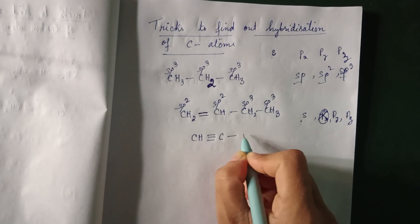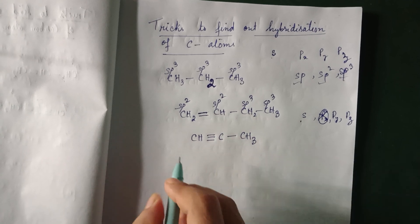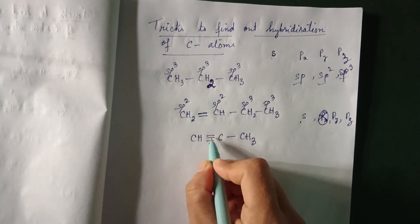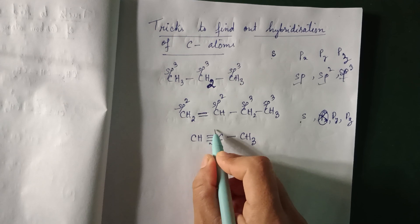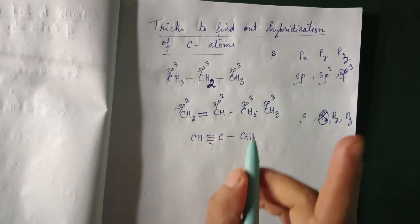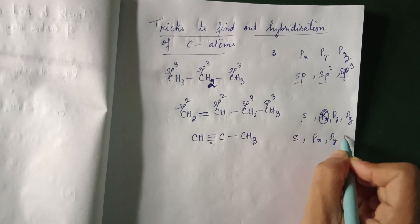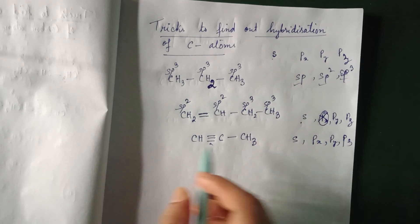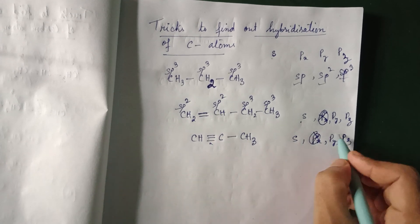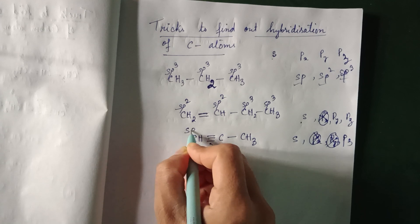Now let us go to a carbon with a triple bond: CH triple bond C single bond CH3. A triple bond means one sigma bond and two pi bonds. Whenever a pi bond is present, one p orbital is utilized. So the first pi bond uses one p orbital, and the second pi bond uses another p orbital. Only one p orbital remains, giving sp hybridization.